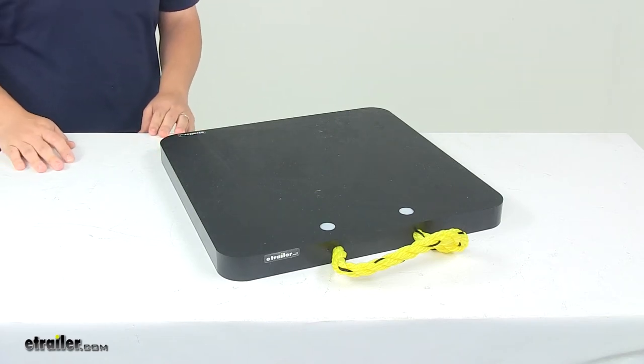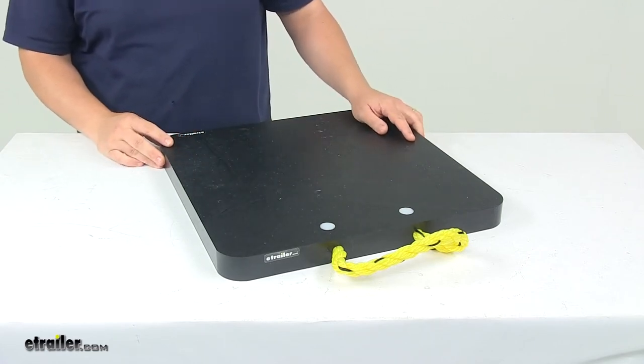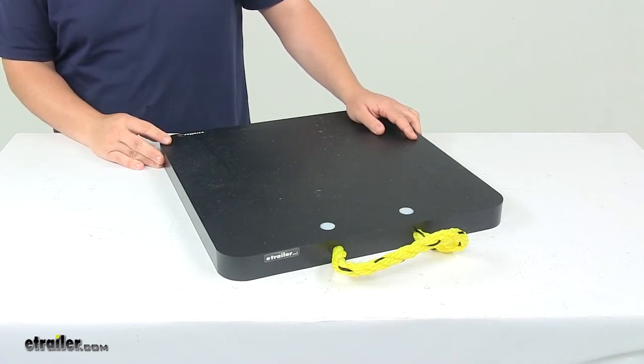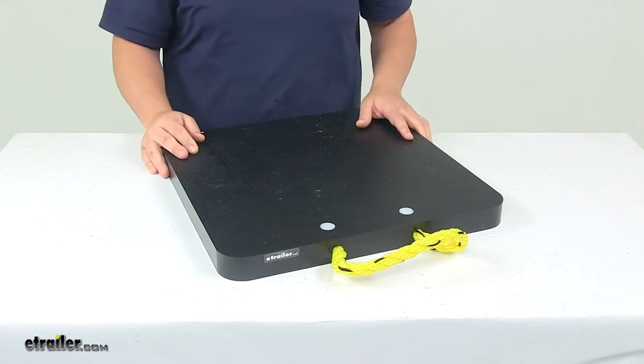Today we're taking a look at an outrigger pad. This outrigger pad is designed to protect concrete, paved, and other surfaces from heavy equipment vehicles such as utility trucks, tree trimmers, cranes, fire trucks, and so on.